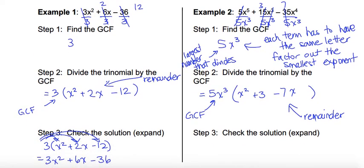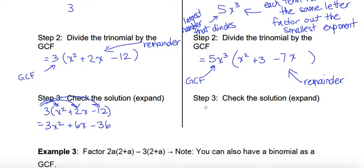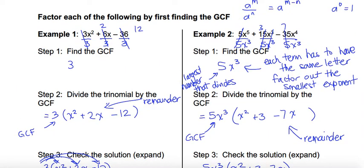You can always check the solution by applying the distributive property to make sure your answer goes back to the original. So 5 times x³ times x squared is 5x to the power of 5; 5 times 3 gives 15 and then x to the power of 3; and 5 times negative 7 is negative 35 and x³ times x is x to the power of 4. That matches what we started with, so the answer is correct.